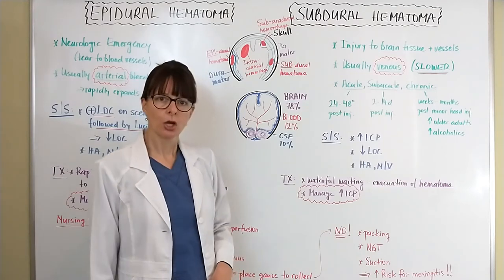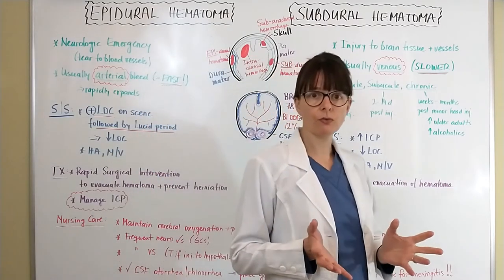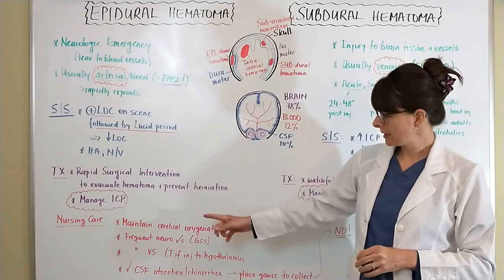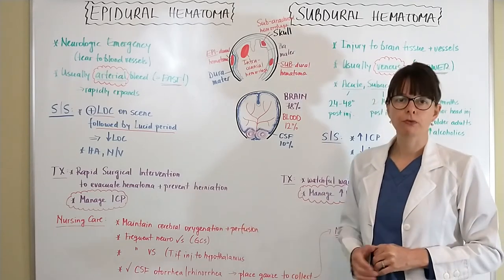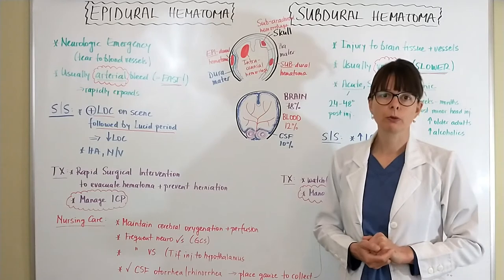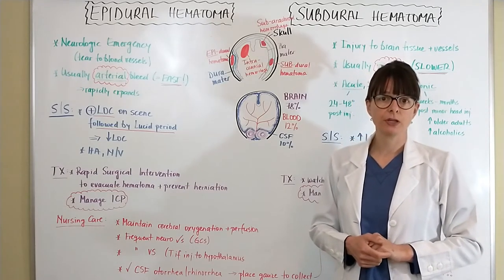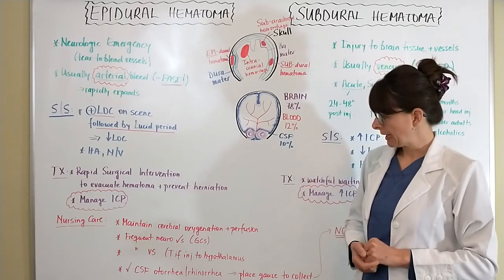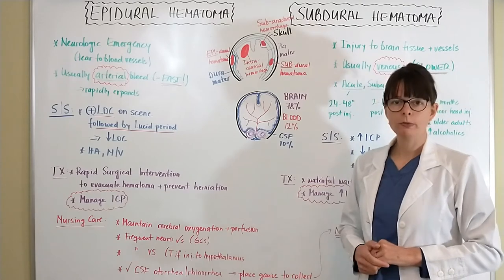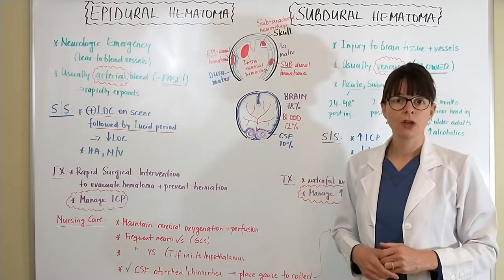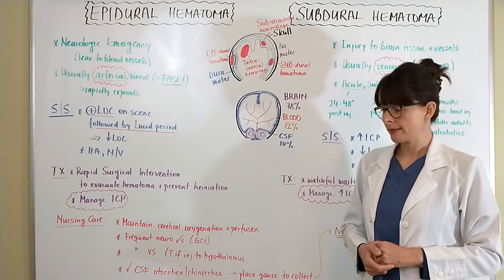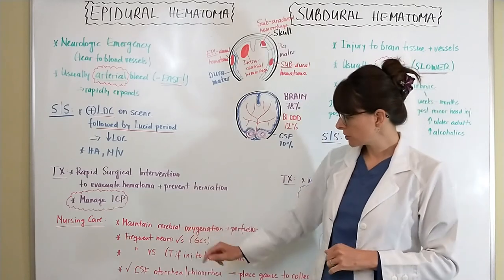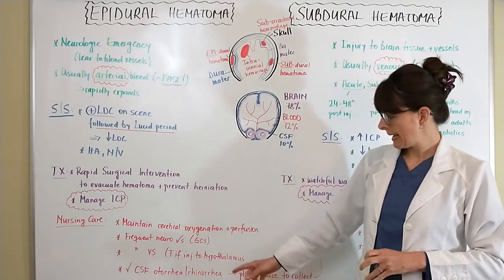For nursing care of patients with epidural or subdural hematomas, we want to maintain cerebral oxygenation and perfusion, which depends on cerebral perfusion pressure — covered in a separate video. We also want to perform frequent neurological checks, Glasgow Coma Scale assessments, and complete cranial nerve and peripheral neurovascular assessments to determine if the patient is getting better, worse, or staying the same, along with frequent monitoring of vital signs.